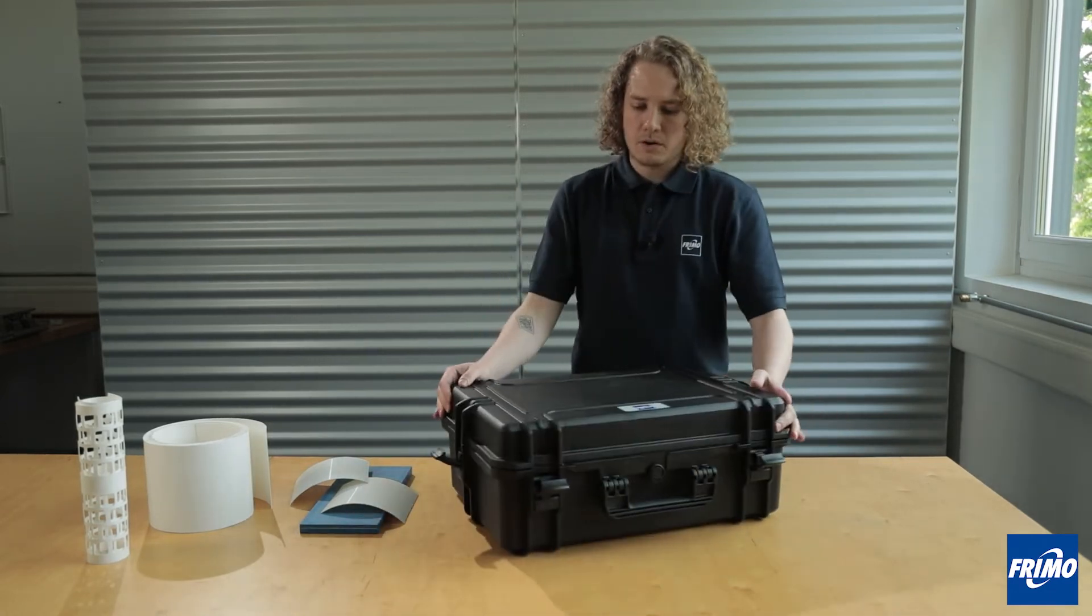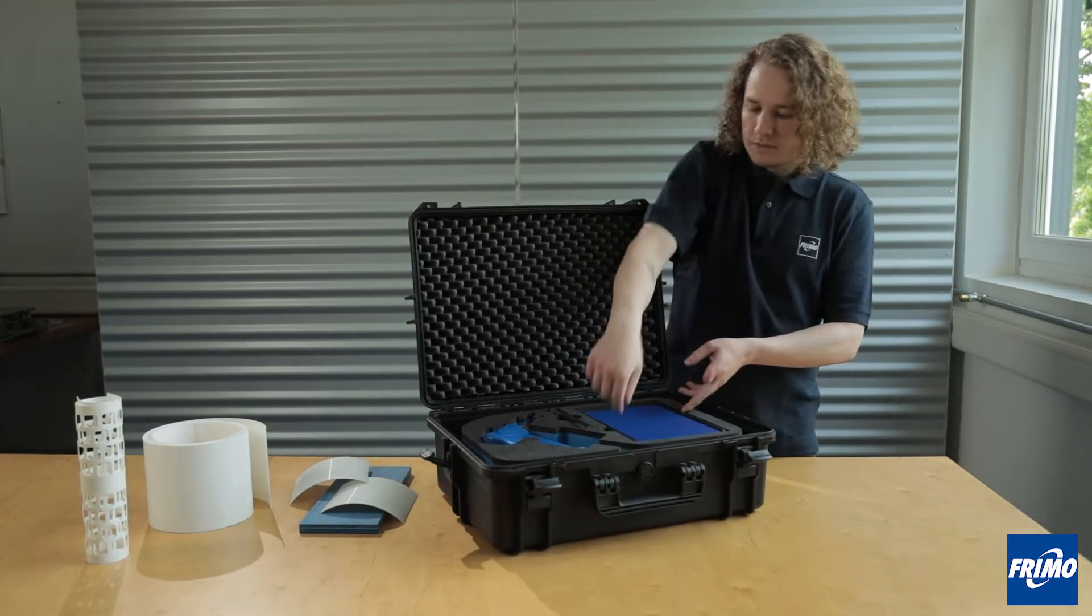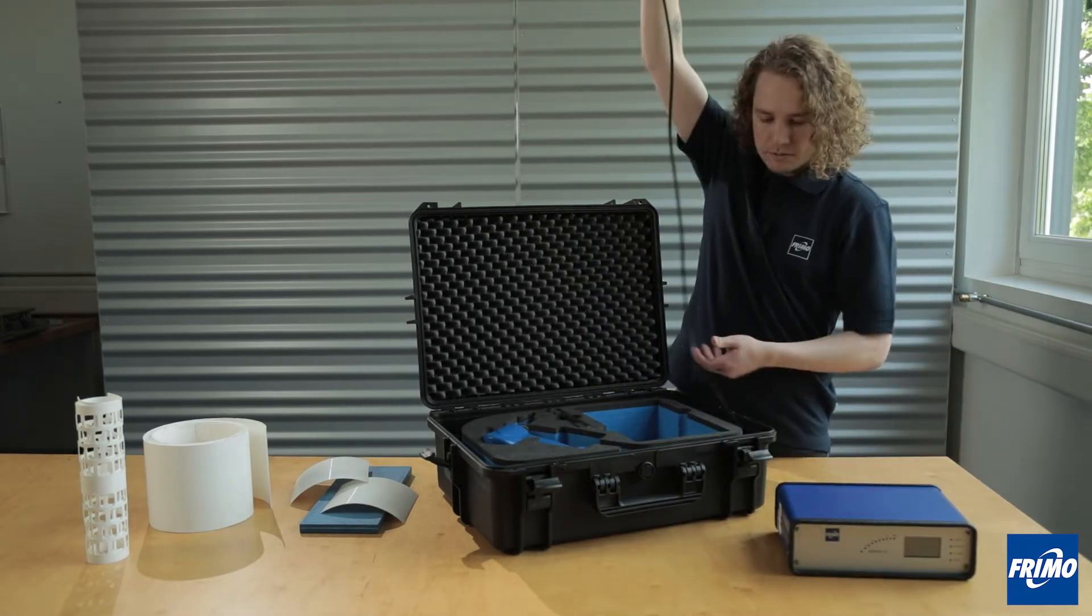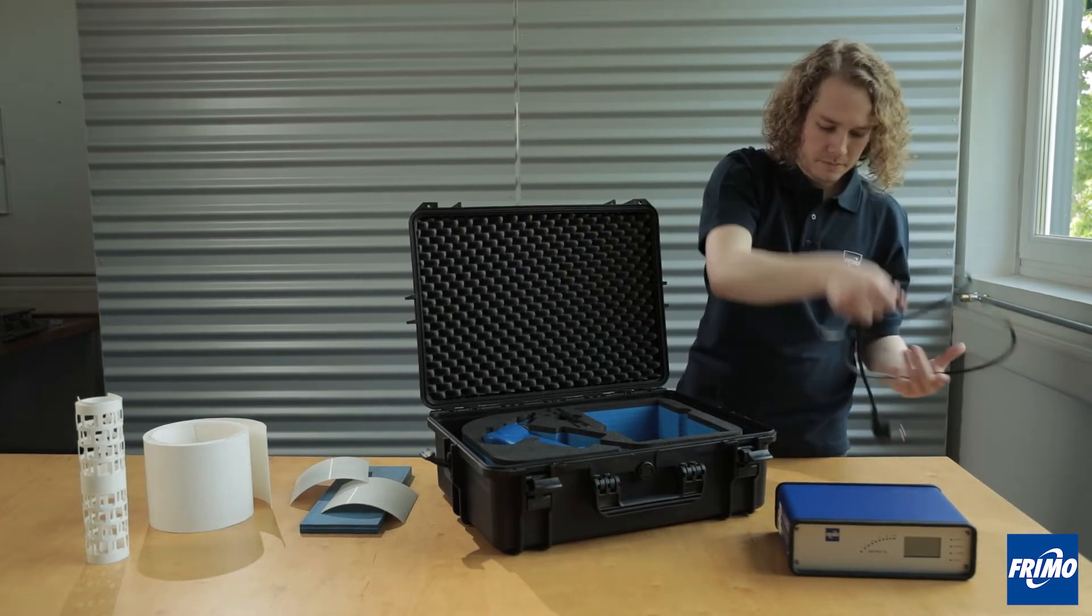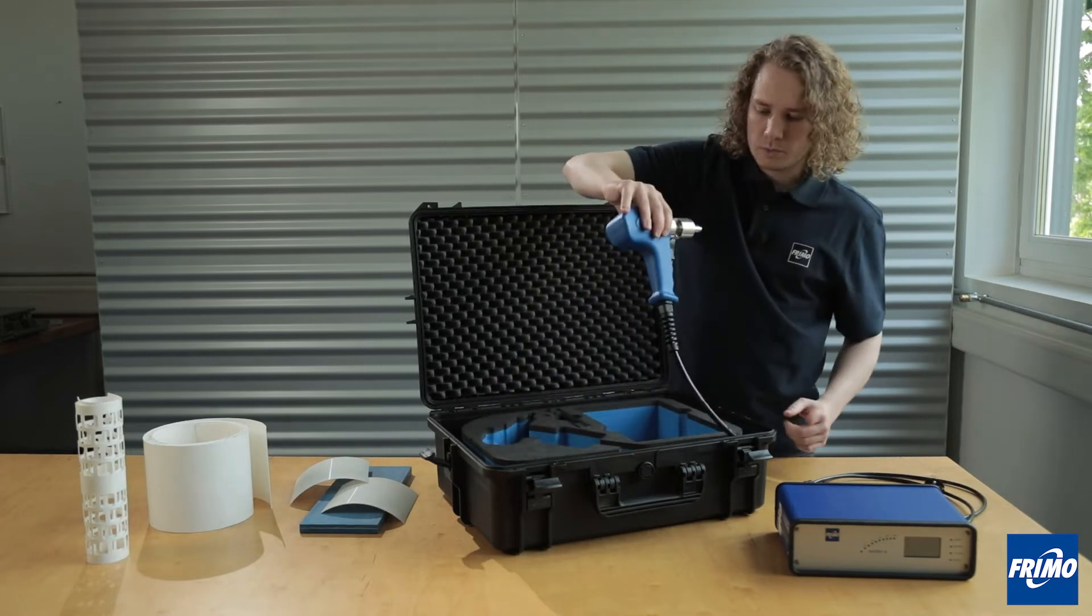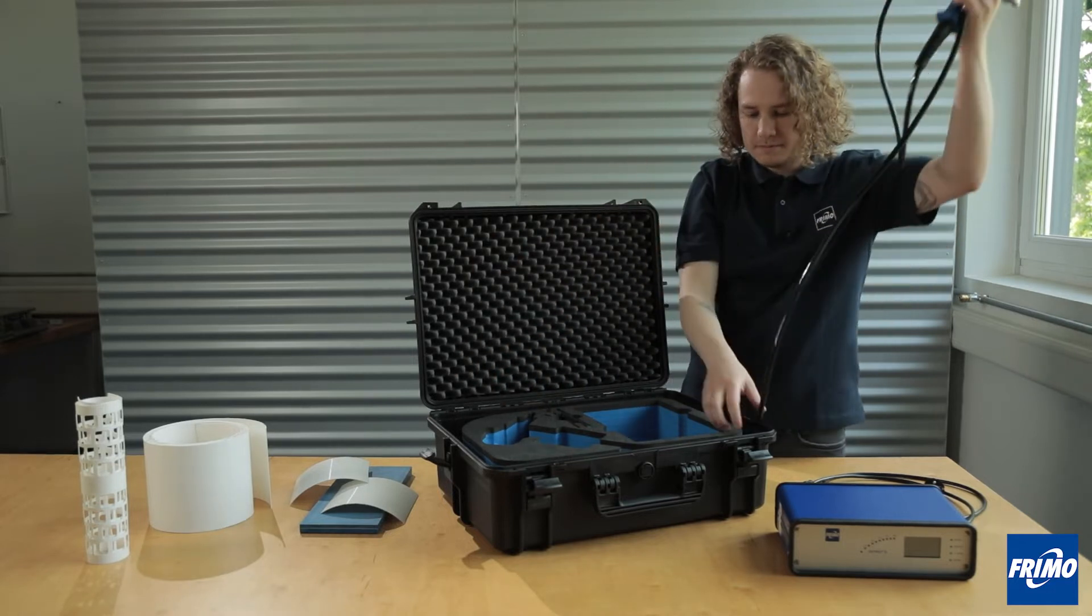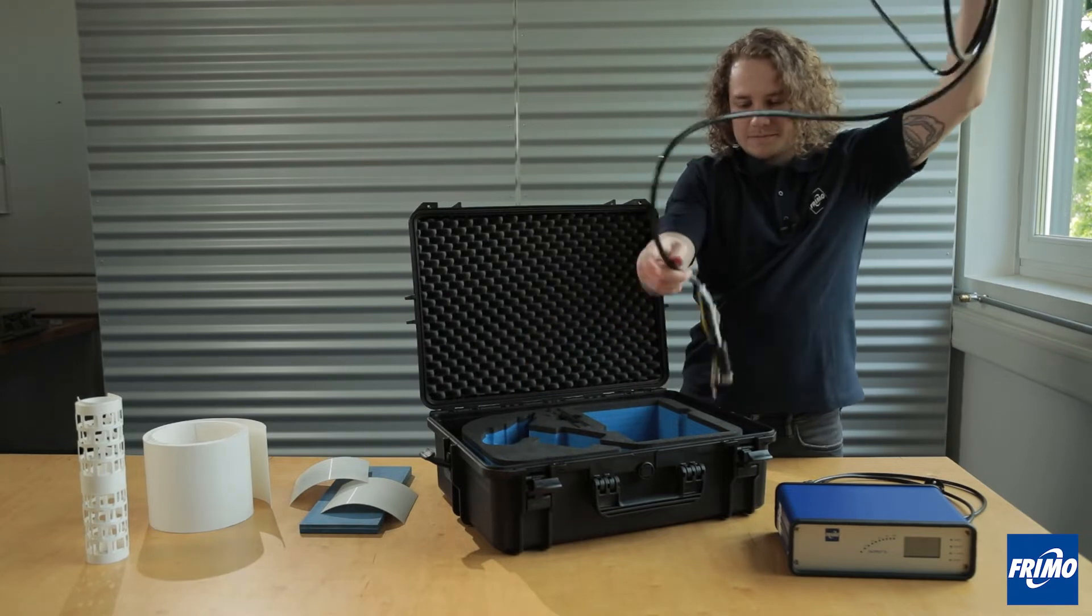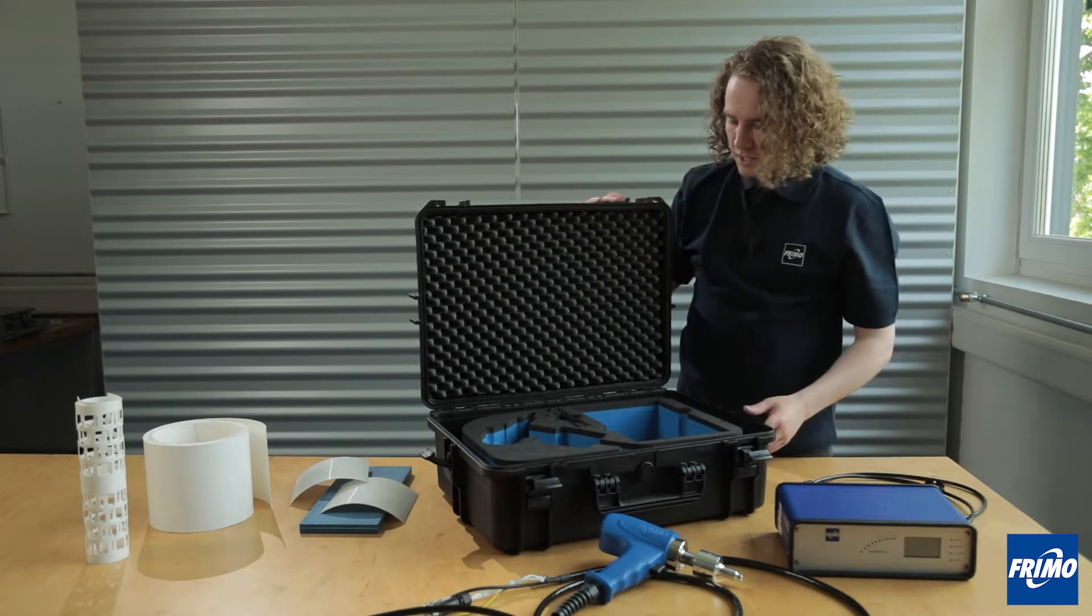Inside we have all the necessary components we need for ultrasonic welding. First let's get the generator out with its power cable. Then we have our very ergonomic hand unit. And that's basically it.